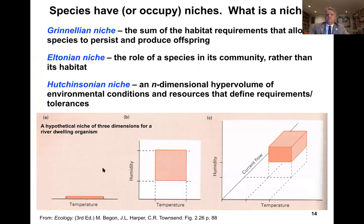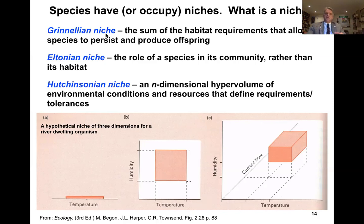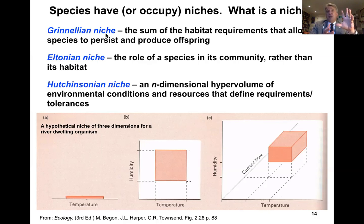What limits geographic ranges to a large extent is the fact that species occupy niches. We can think of niche in three different definitions, but we'll focus on the Hutchinsonian niche. The Grinellian niche is the sum of the habitat requirements that allow a species to persist and produce offspring. The Eltonian niche is the role of a species in its community relative to its habitat.